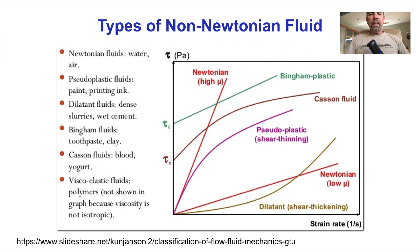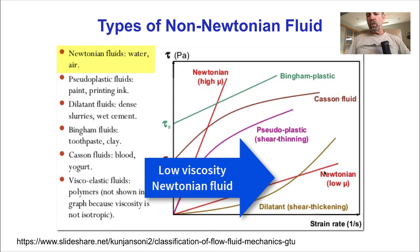So whole blood is a non-Newtonian fluid. Here are some different types of non-Newtonian fluid. Recall that in a Newtonian fluid, the shear stress is linearly proportional to the shear rate, where the slope is the viscosity. So this is the curve for a Newtonian fluid with a low viscosity, and this is a curve for a Newtonian fluid with a high viscosity.